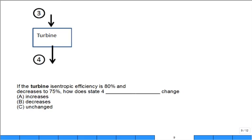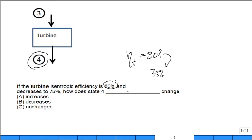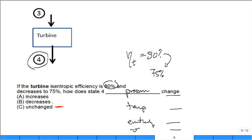Conceptual question: if the turbine isentropic efficiency decreases from 80% to 75%, how does state 4 actual change? Pressure: unchanged — by our assumption, the exit pressure remains the same regardless of isentropic efficiency. Temperature: goes up. This is where the T-S diagram helps you think — lower efficiency means more irreversibility and the state moves further right and upward on the low-pressure line.